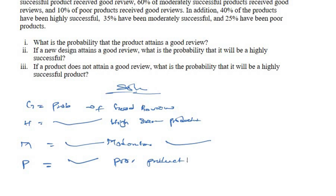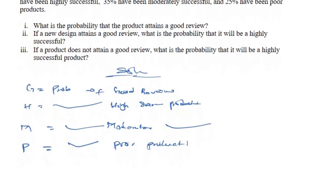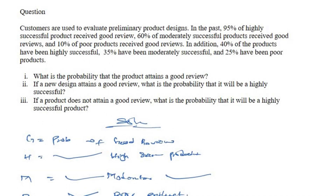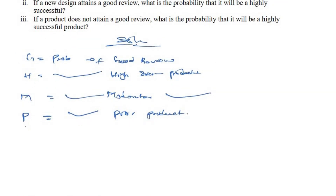We have defined our events as G, H, M, and P. From the question, we are told that 40% of products have been highly successful, so the probability of highly successful, P(H), is equal to 40% which is 0.4.